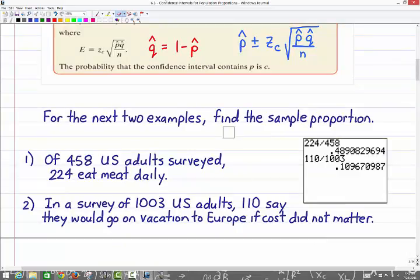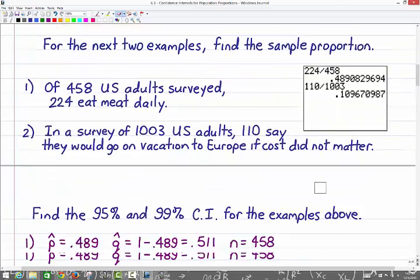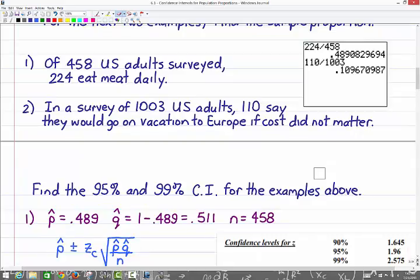And the next one says in a survey of 1,003 adults, 110 say they would go on vacation to Europe if cost didn't matter. So we were trying to come up with a confidence interval for what proportion of all U.S. adults. This our sample proportion then would be 110 divided by 1,003 and you'd see it's .1096. Now if you're doing these in the calculator it certainly wouldn't hurt to use three or four decimal places. If you're using the formula it would not hurt to maybe use about four decimal places just to make it more accurate.